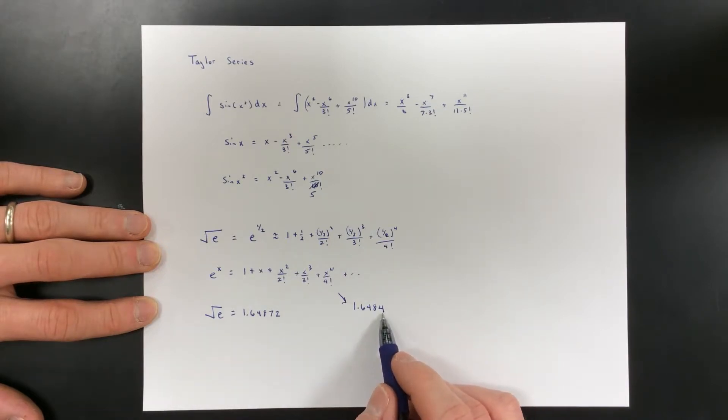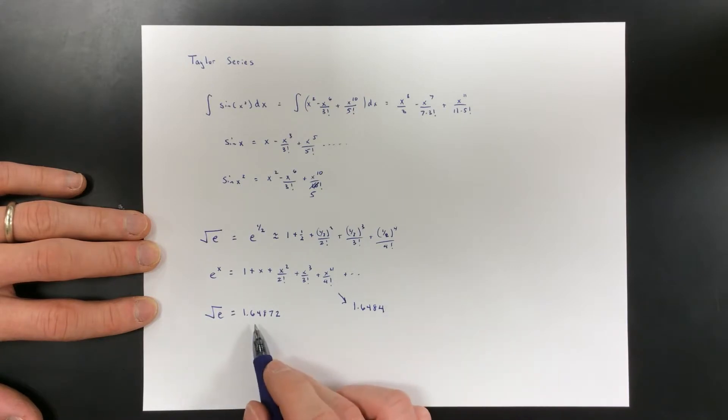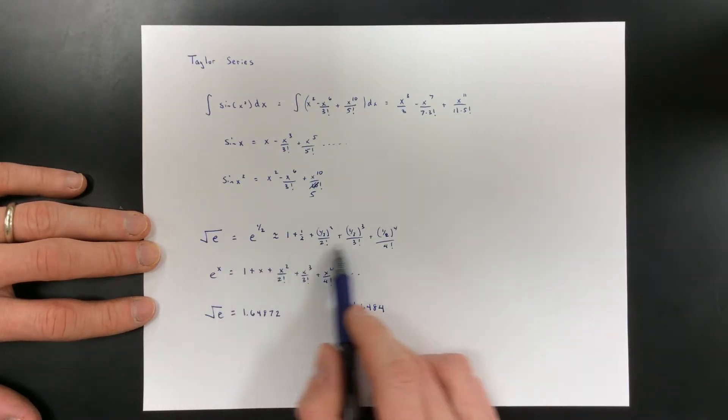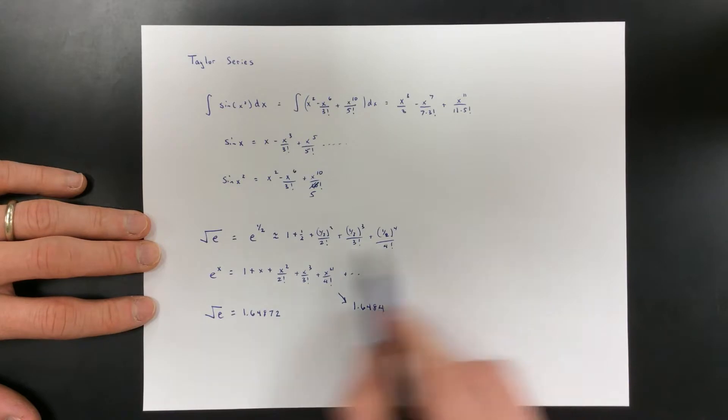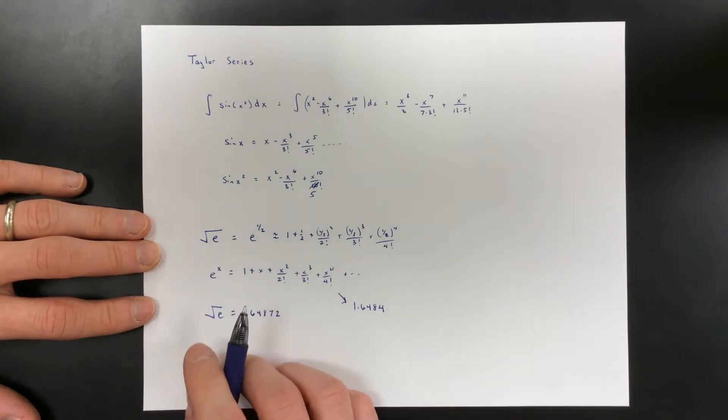So it agrees all the way to the ten thousandth. This is three ten thousandths off of what the calculator tells us. And how do you think the calculator does it? It knows this expansion and it plugs this in. It does these for all these problems.